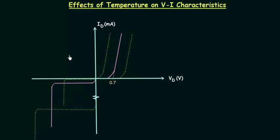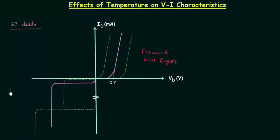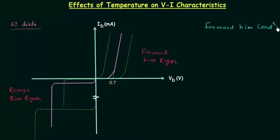Let us take VI characteristics of a silicon diode to understand the effects of temperature. This is the VI characteristics of a silicon diode; because of this we have barrier potential equal to 0.7V. Once the applied voltage across the diode is equal to 0.7V, there is an exponential increase in current. This is the forward bias region and this is the reverse bias region.